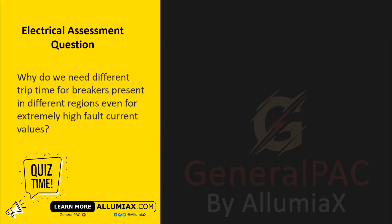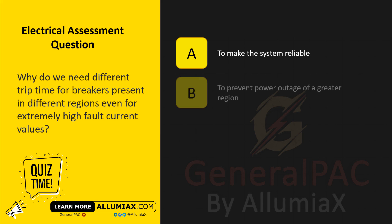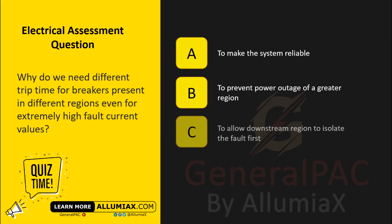Why do we need different trip times for breakers present in different regions, even for extremely high fault current values? A. To make the system reliable. B. To prevent power outage of a greater region. C. To allow the downstream region to isolate the fault first.